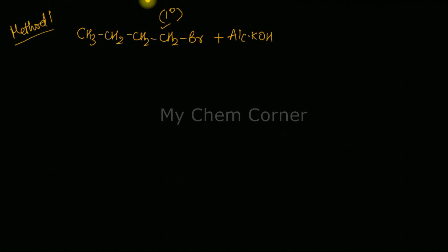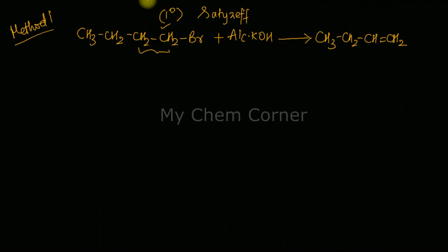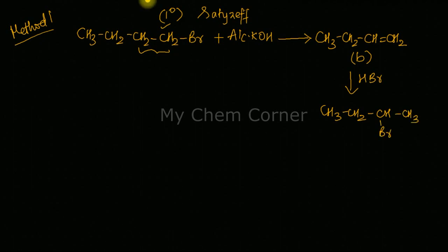Treating a primary alkyl halide with alcoholic KOH follows Saytzeff's rule — a double bond forms, giving compound B: CH3CH2CH=CH2 (but-1-ene). Next, treating B with HBr follows Markovnikov's rule: Br bonds to the carbon with the least number of hydrogen atoms, giving compound C as 2-bromobutane.